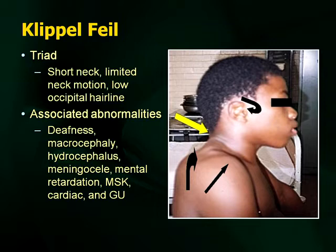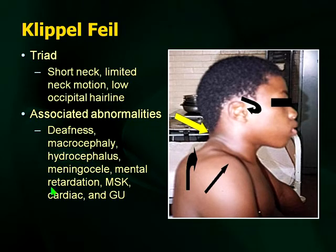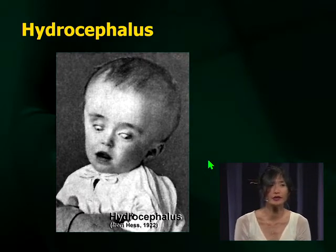Other congenital abnormalities that may appear on your examination include Klippel-Feil syndrome, which constitutes a triad. The primary abnormality is in the cervical spine — fusion of the bones of the C-spine — leading to a short neck, limited neck motion, and low occipital hairline. Multiple anomalies are associated including deafness, macrocephaly, hydrocephalus, mental retardation, musculoskeletal, cardiac and GU problems. For your purposes, remember the triad and that it's fusion of the cervical spine.